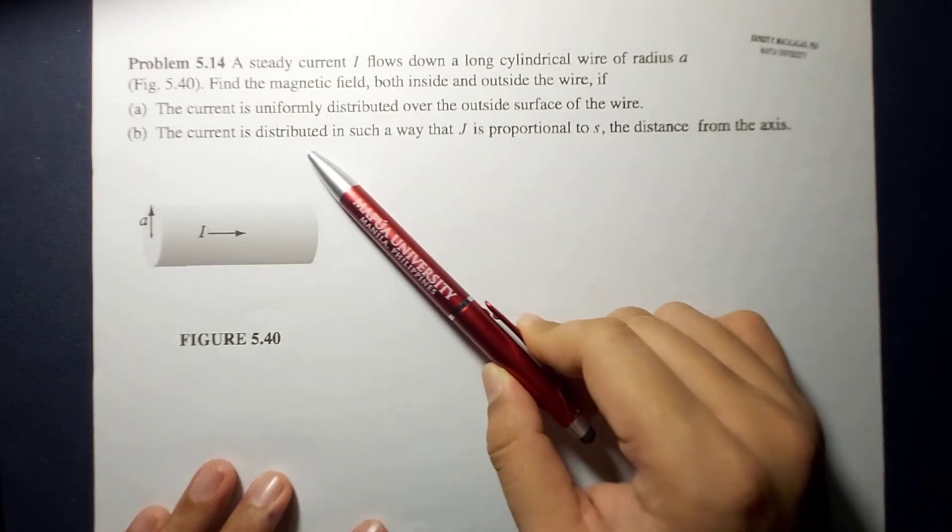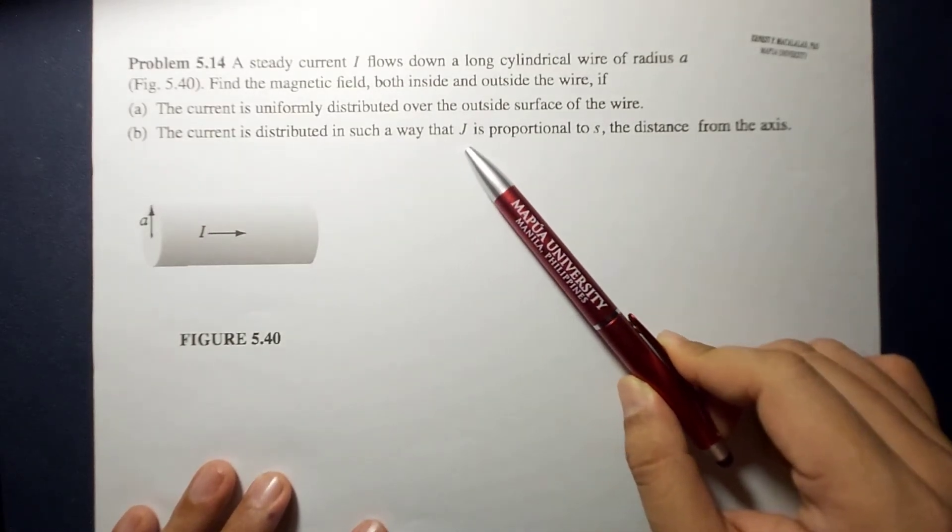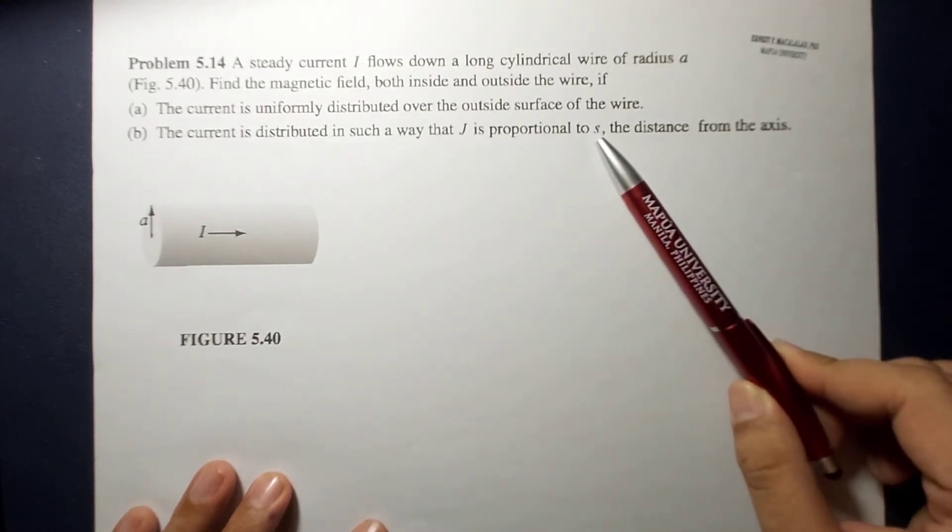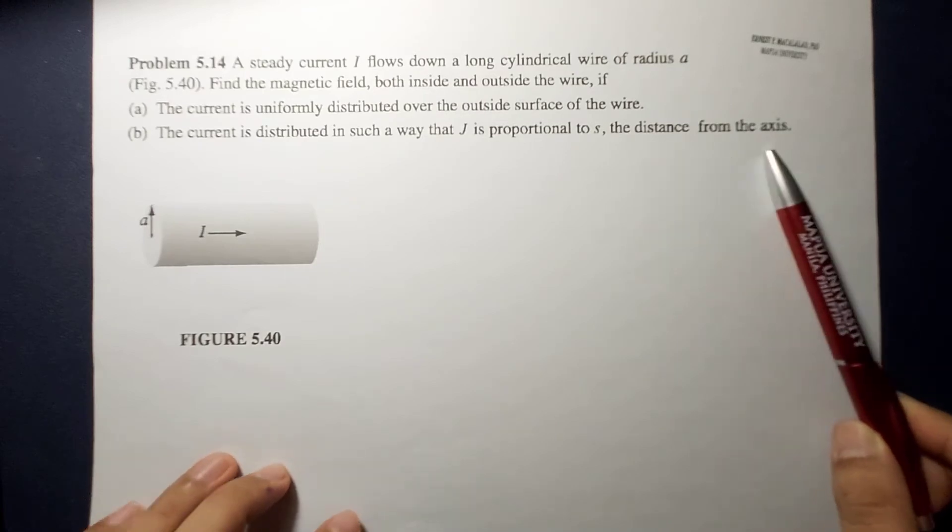the current distributed in such a way that J is proportional to S, or the current density is proportional to the distance S, the distance from the axis.